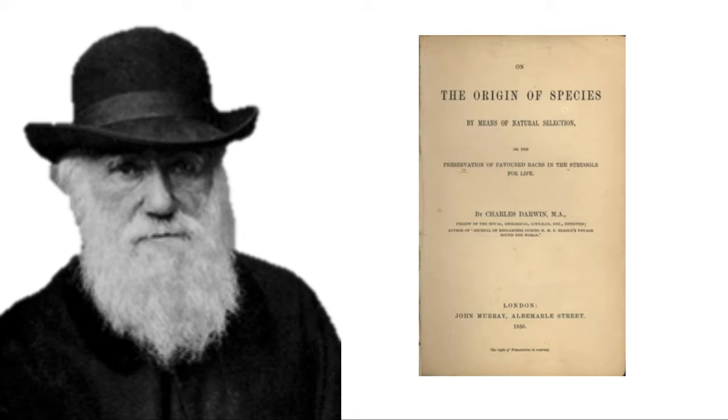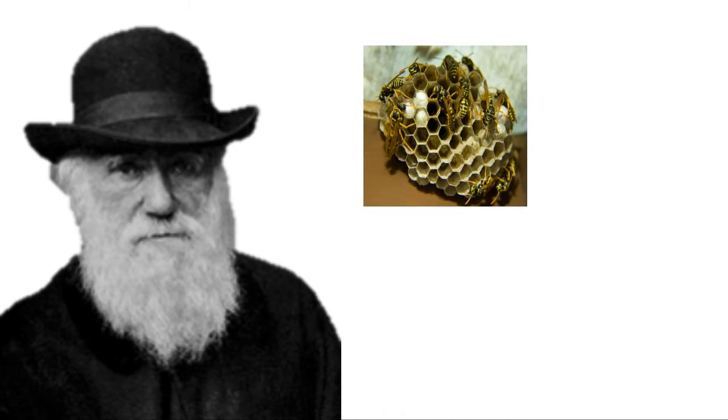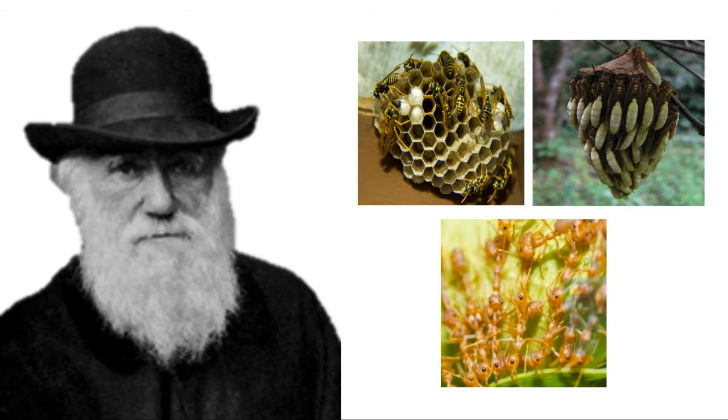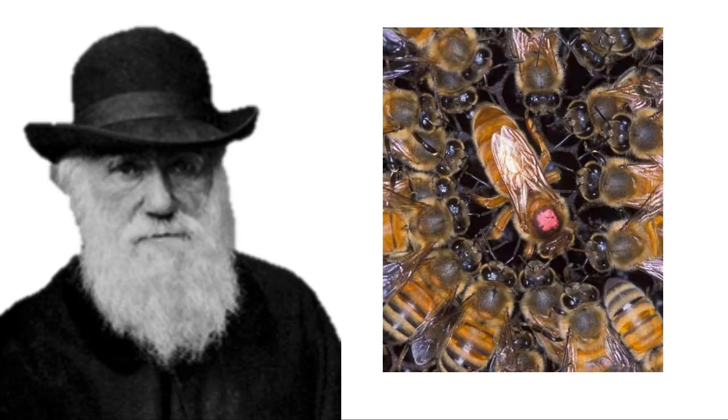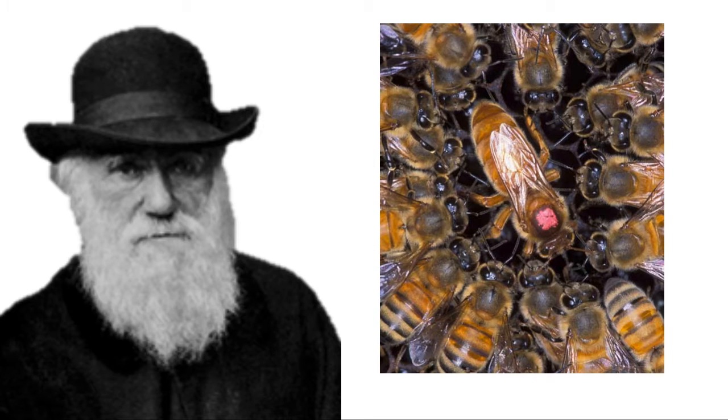Darwin himself was particularly interested in why animals group together and was particularly concerned by eusocial insects, such as wasps, bees and ants. In some of these eusocial colonies, it will only be the queen that reproduces, whilst her siblings do not, who instead protect the nest and care for young.